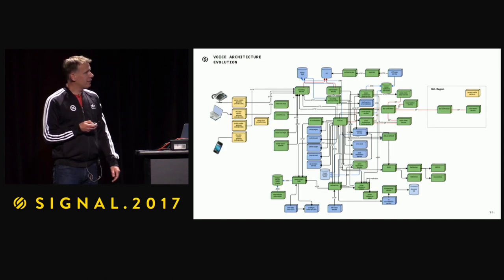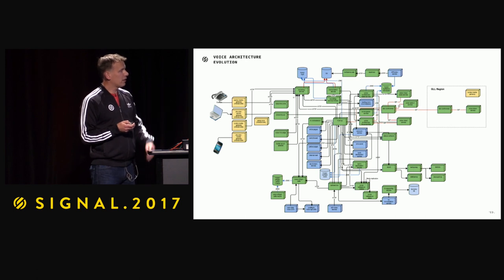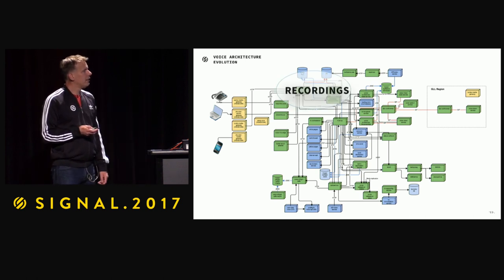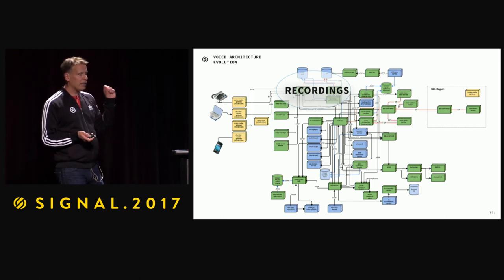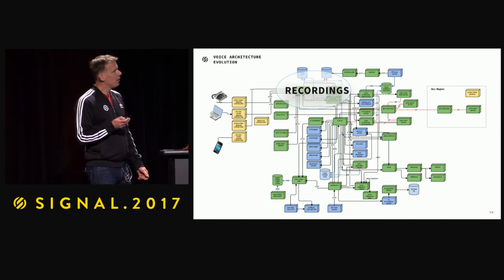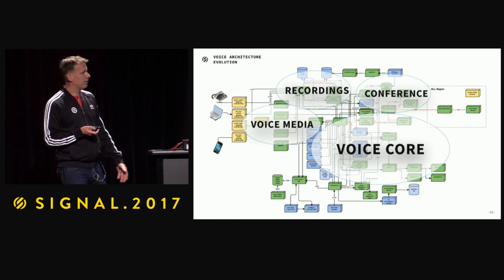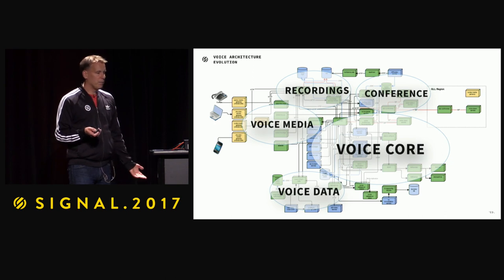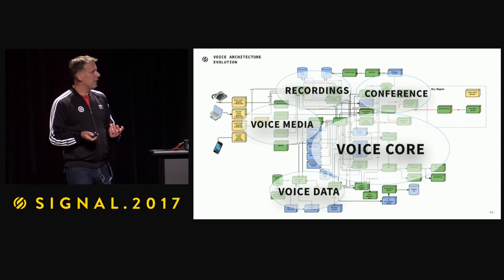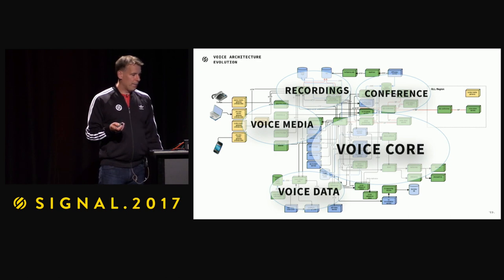Going back to that snapshot of the services we have right now — this is our voice stack in its current state. We've decomposed not only into services but also grown the team and decomposed into multiple agile teams: a recordings team, a conference team, voice media, the voice core — the biggest team with the most services — and the voice data team. We now have five different independent agile teams. The only time they really need to talk is when we have to change an interface between services. That's another way of scaling using decomposition.